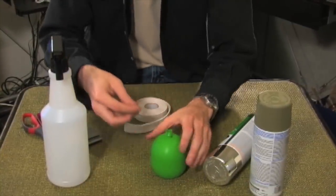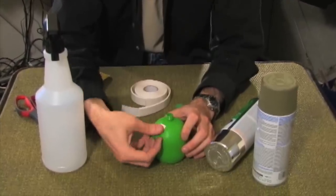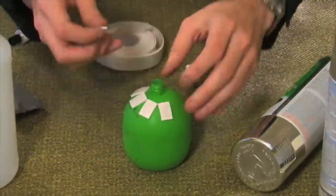Take the adhesive squares and stick them on the bottle in a grenade pattern. Be sure to leave enough room at the top to accommodate the nozzle.